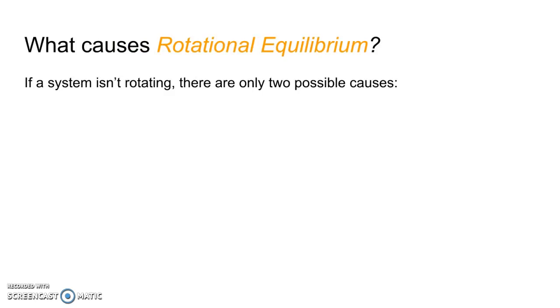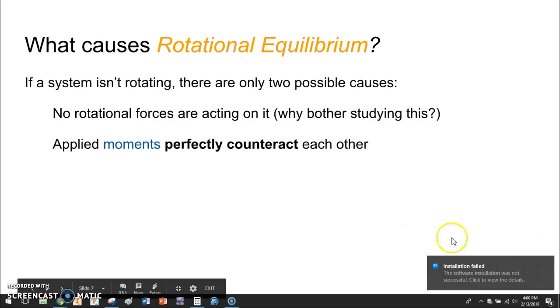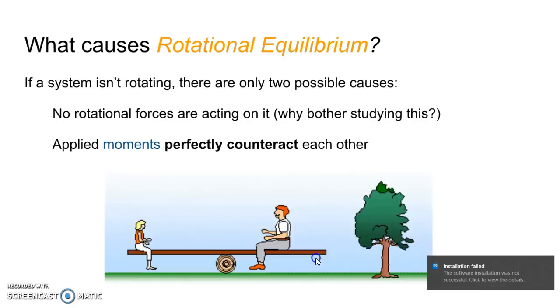If a system is not rotating, there's only two possible causes. The first one might be maybe no rotational forces are acting on it. And if that's the case, I mean, why are we bothering studying that? Let's bother with something that actually has something going on. In that case, we're talking about when applied moments, rotational forces perfectly counteract each other.